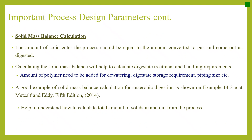For solid mass balance calculations, the amount of solids entering the process equals the amount converted to gas plus the amount coming out as digestate. Calculating the solid mass balance helps determine digestate treatment and handling requirements — such as the amount of polymer needed for dewatering, digestate storage requirements, and piping sizing. A good example of solid mass balance calculation for anaerobic digestion is shown in Example 14.3 of Metcalf and Eddy, 5th edition.